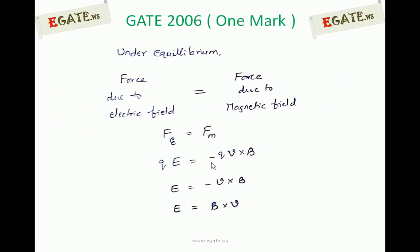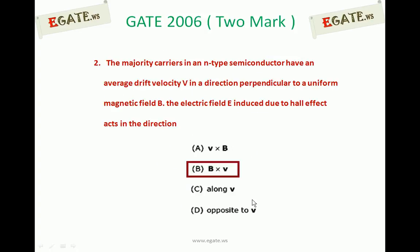QE is equal to minus Q into V cross B. So E is equal to minus V cross B. Taking out this minus sign, E will be treated as B cross V. So the correct answer for this one is B cross V. Answer is B. Thank you.